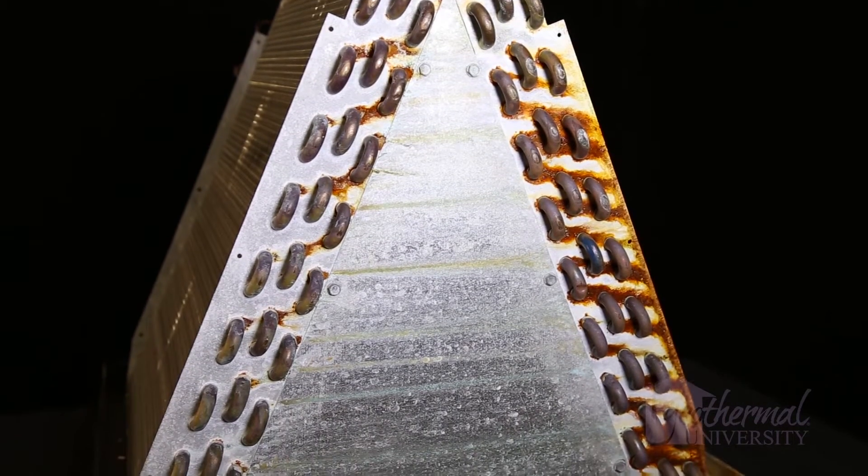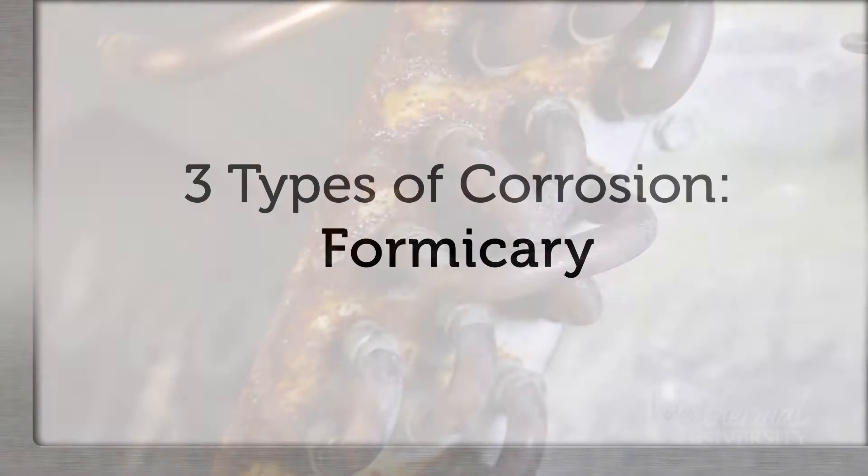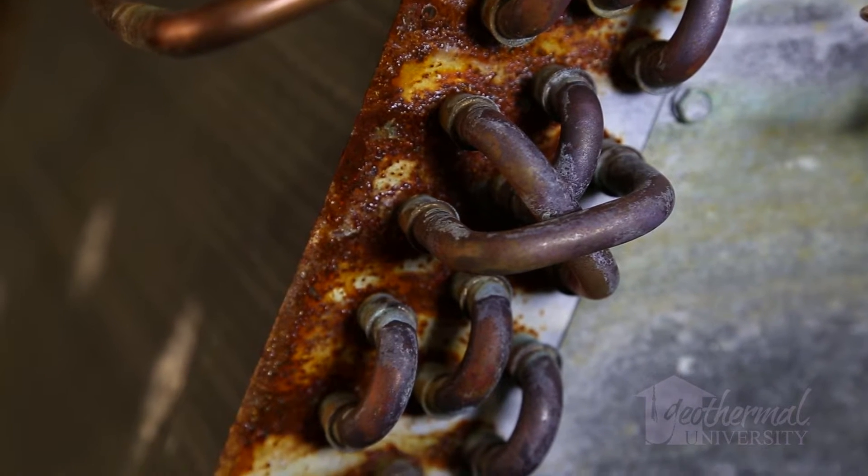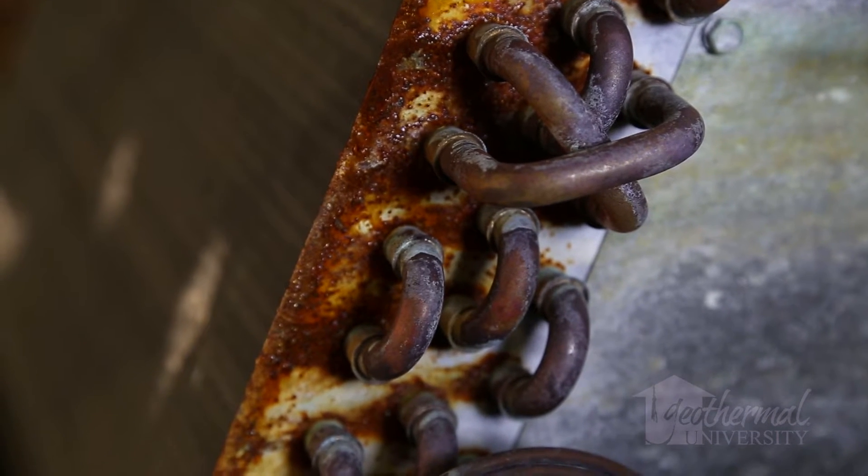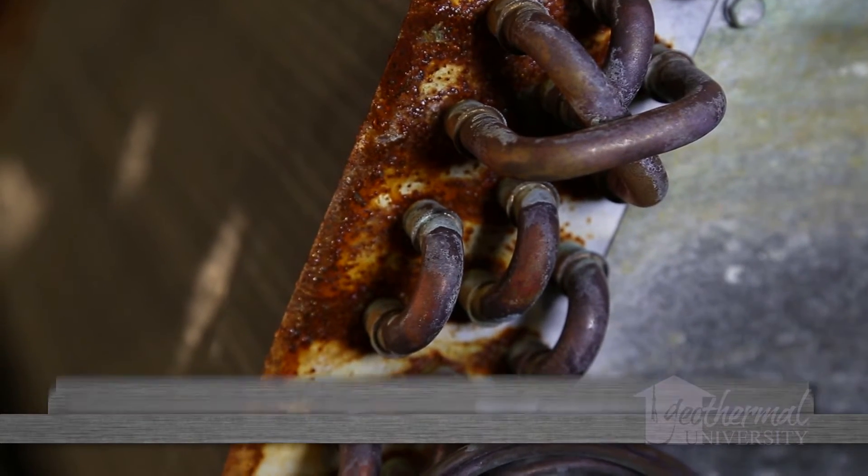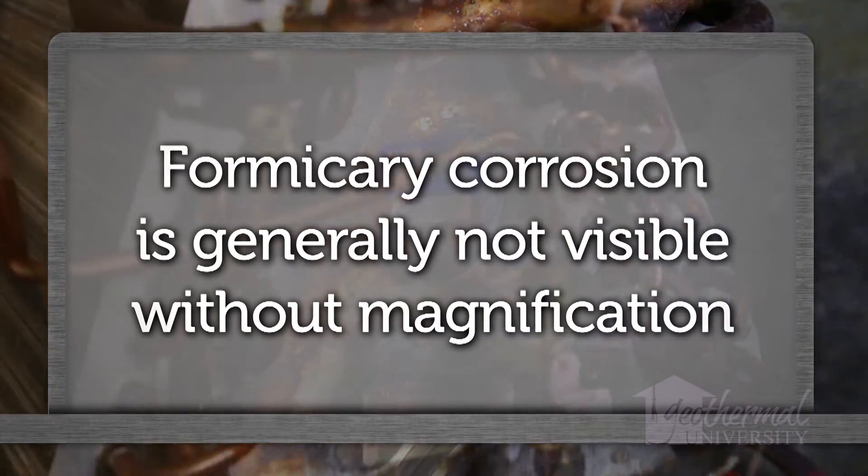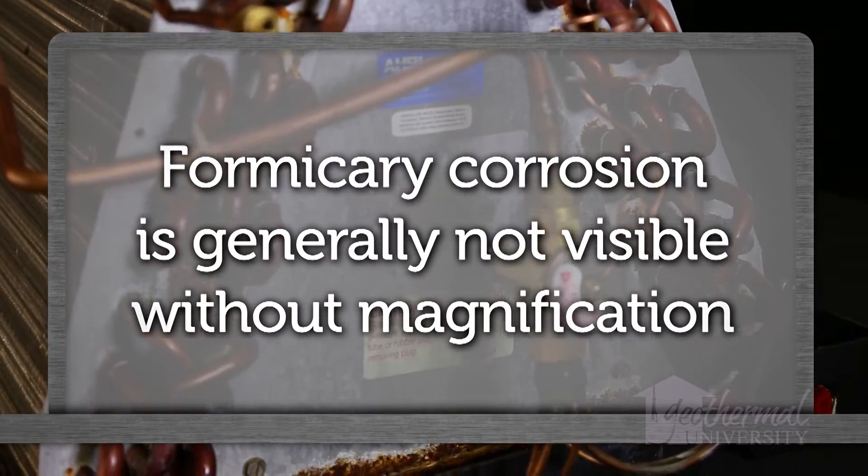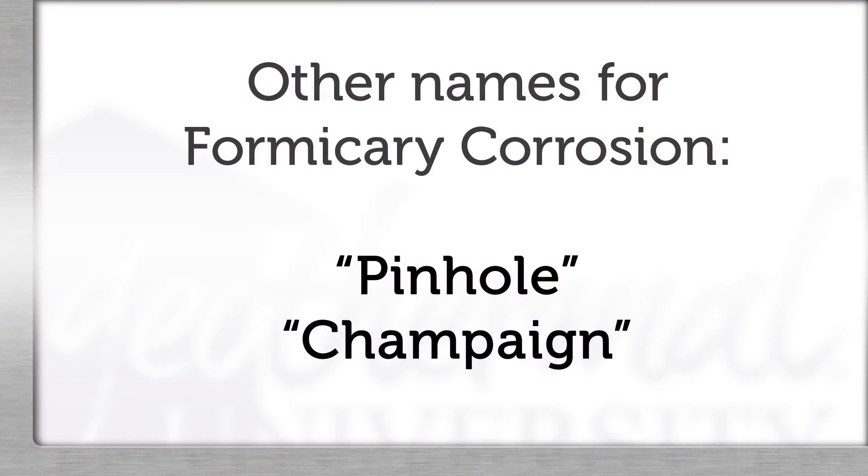Electrolytes are drawn to a crevice through capillary action. Formicary corrosion only occurs in copper-based alloys and HVAC coils made of copper. If you see corrosion it is probably not formicary corrosion because it is not generally visible without magnification. Other nicknames for formicary corrosion are pinhole or champagne leaks due to the micro size of the actual holes in the copper.